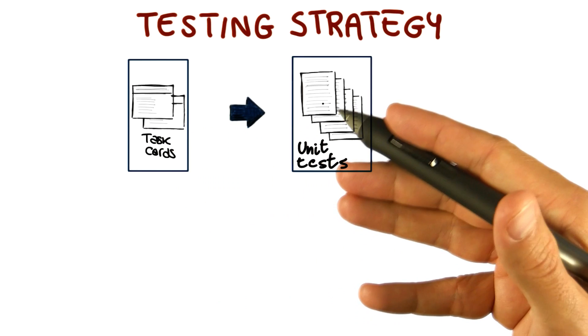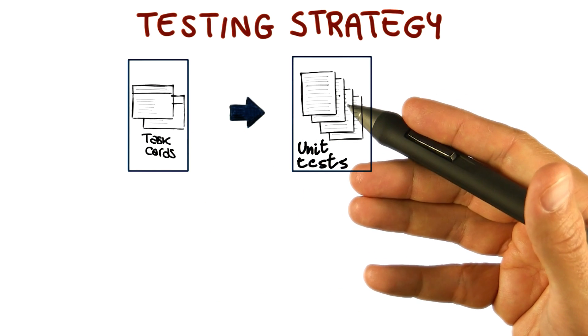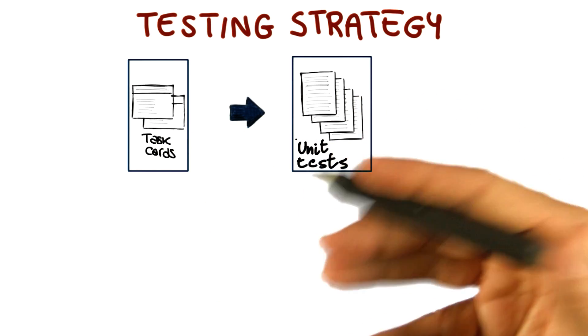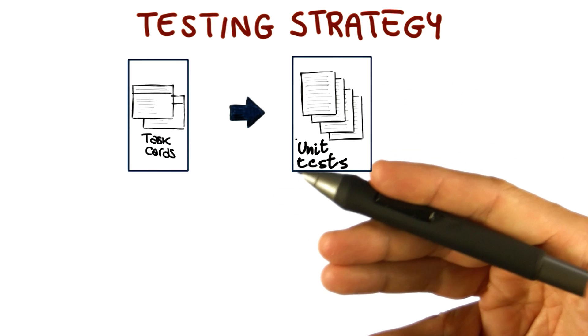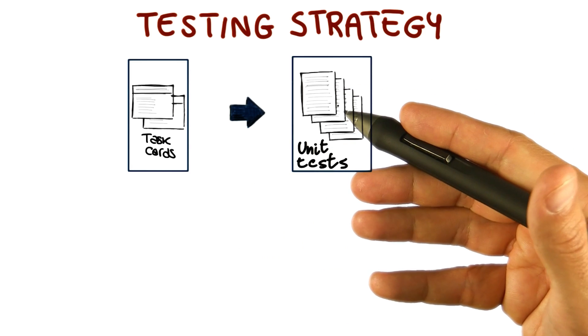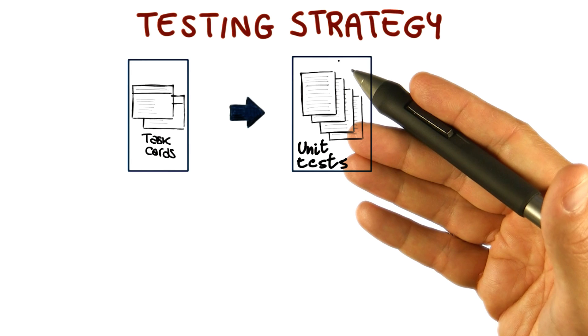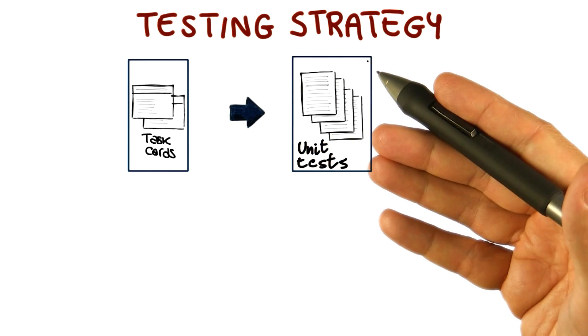And as we said, you should really test every meaningful feature. So, for example, you should test every meaningful method in your classes. You should put specific attention to possibly complex implementations, special cases, or specific problems that you might think of while reading the task cards.